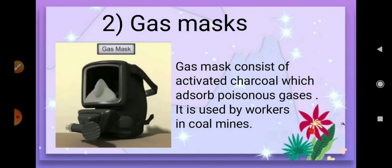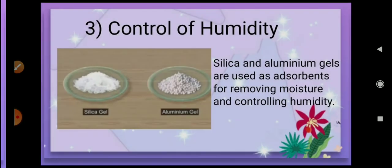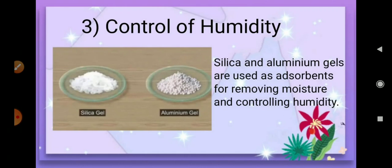The next application is the gas mask. A gas mask consists of activated charcoal which adsorbs poisonous gases. These gas masks are commonly used by miners — the workers working in mines — because there are poisonous gases like carbon monoxide and methane in the atmosphere of a coal mine. Therefore, these masks help to purify the air for breathing.